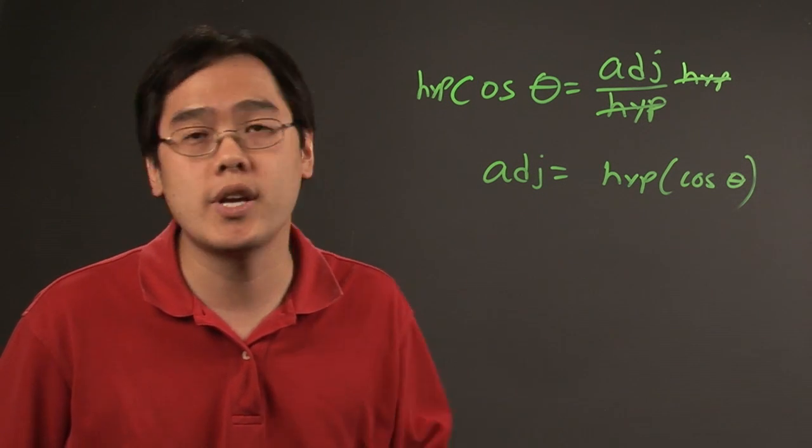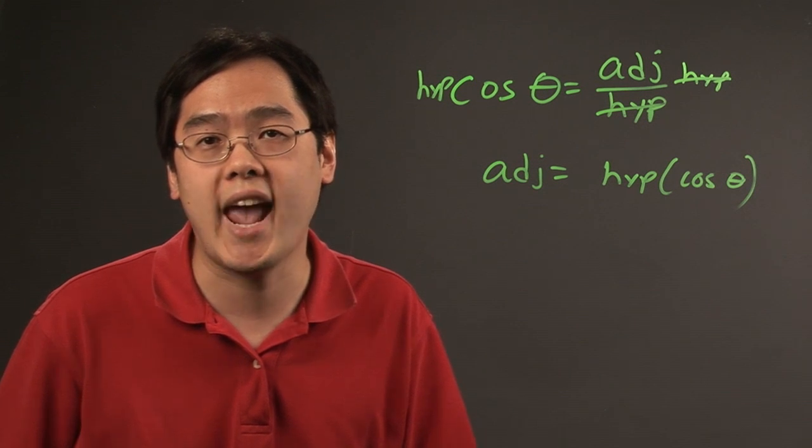So, I'm Jimmy Chang and that's how to calculate cosine angles given the hypotenuse and an angle.